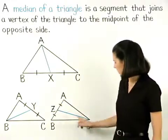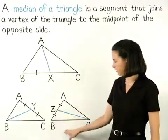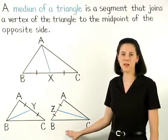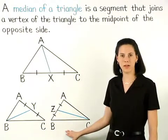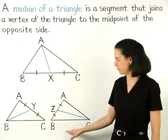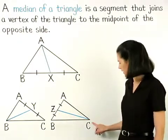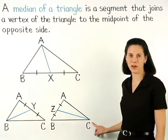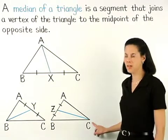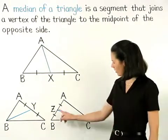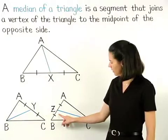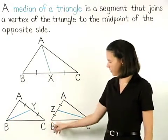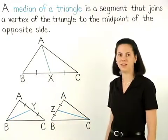And segment CZ is a median of the triangle because one of its endpoints, C, is a vertex of the triangle, and its other endpoint, Z, is the midpoint of the opposite side.